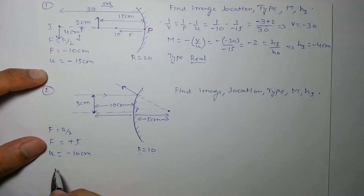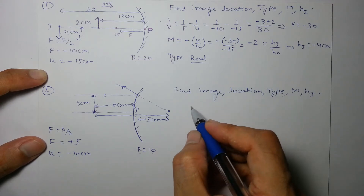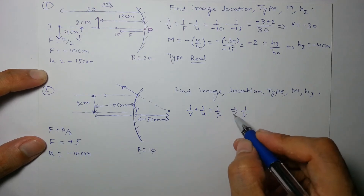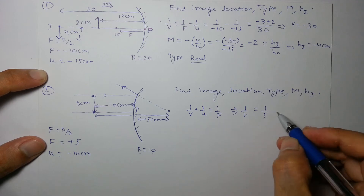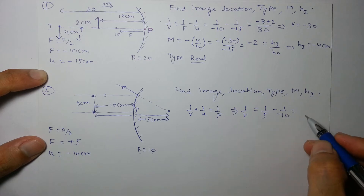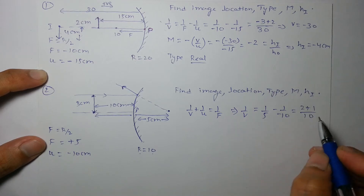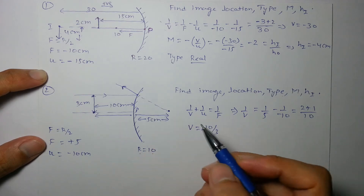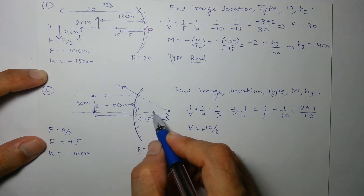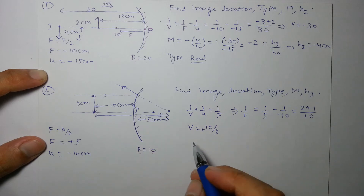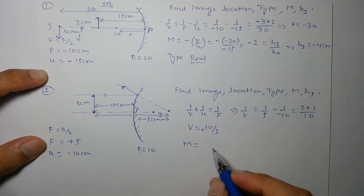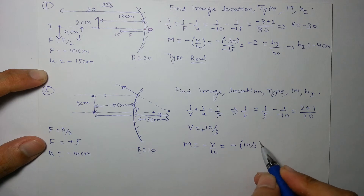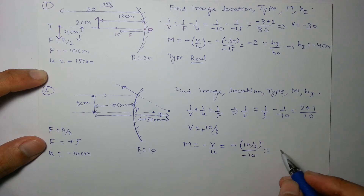Using mirror formula: 1/v = 1/f − 1/u = 1/5 − 1/(−10) = 2/10 + 1/10 = 3/10, so v = +10/3 cm. Since v is positive, the image forms behind the mirror at approximately 3.3 cm. Magnification = −v/u = −(10/3)/(−10) = +1/3.